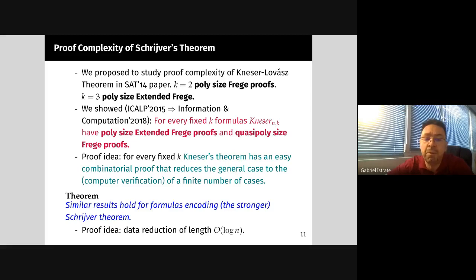In this paper, applying our main theorem, we show that similar results in terms of complexity hold for the formulas including the stronger Schreiber's theorem. We do a data reduction of length order log n, which gives us quasi-polynomial size Frege proofs.